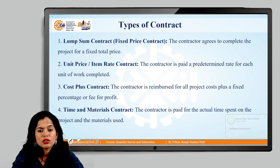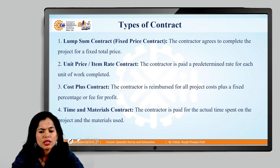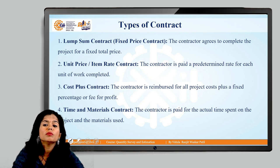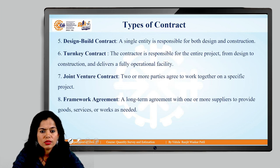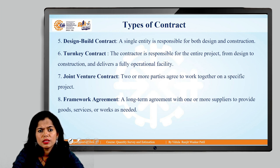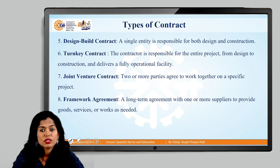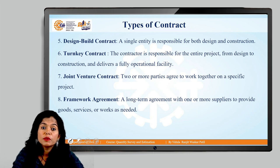Time and material contract: this contract is related to the total time period required for completion of the project along with the material they use. The material here is provided by the contractors. The next is the design and build contract type, where the contractor designs the whole project. They do not receive drawings; the contractor has to design, build, and hand over the project.